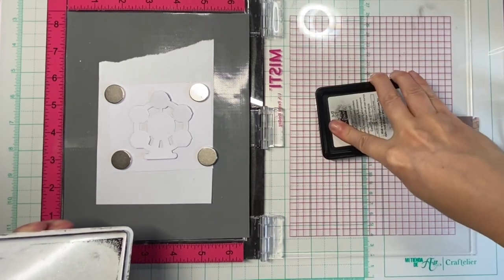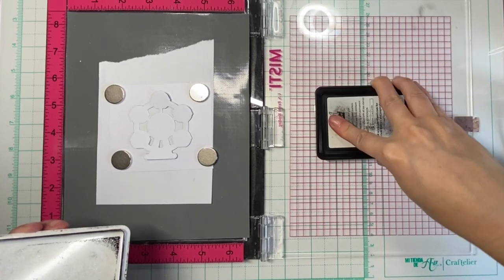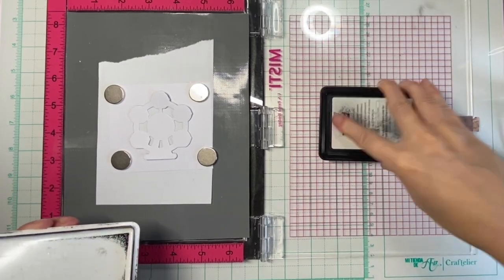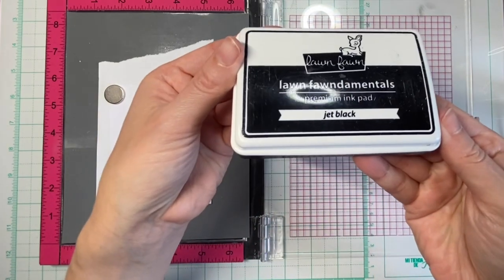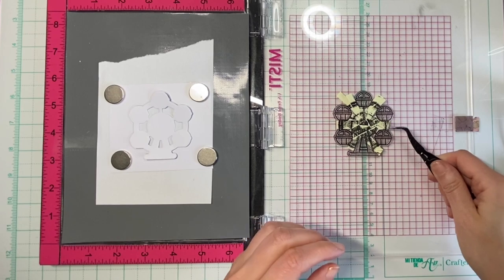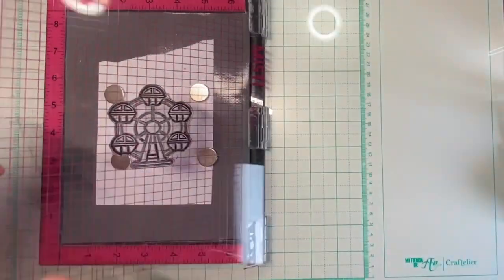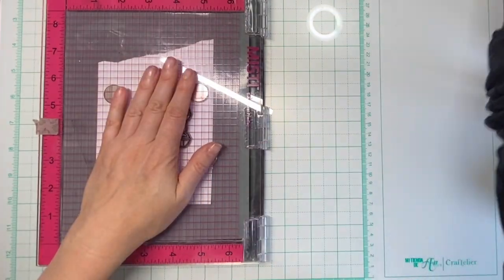To not bother you with this whole tedious process, I skipped ahead and everything is masked. Now I can apply my ink. I'm using Lawn Fawn Jet Black ink because it's Copic-friendly. And then I have to remove the masks before stamping.